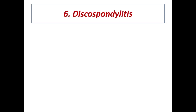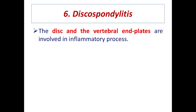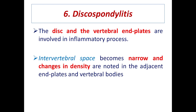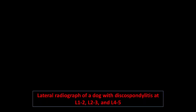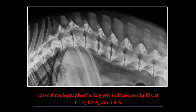Discospondylitis is spondylitis with inflammation of the disc. The intervertebral space becomes narrower and changes in density are noticed in the adjacent end plates and vertebral bodies. This lateral radiograph of a dog shows discospondylitis at L1–L2, L2–L3, and L4–L5.